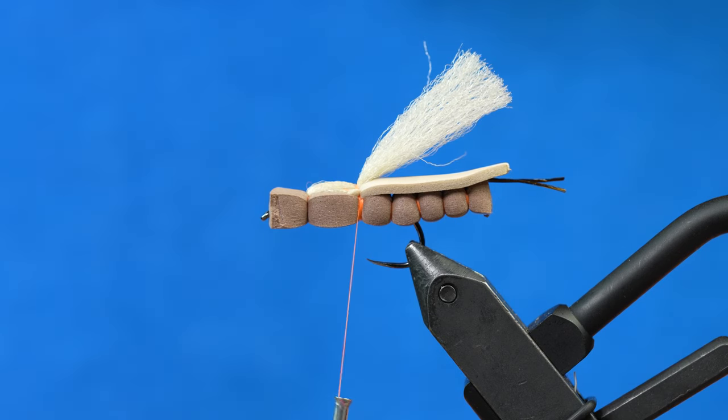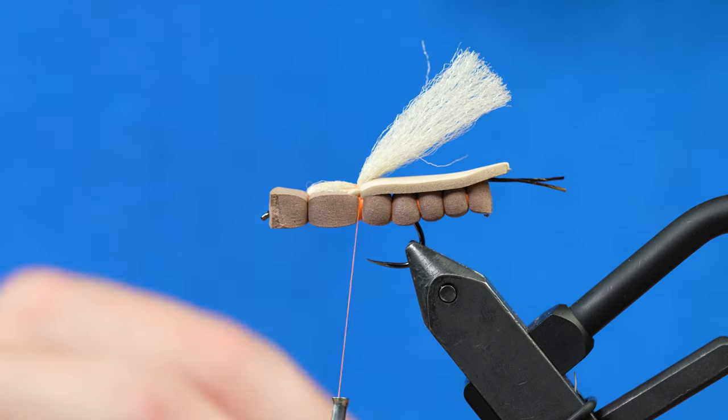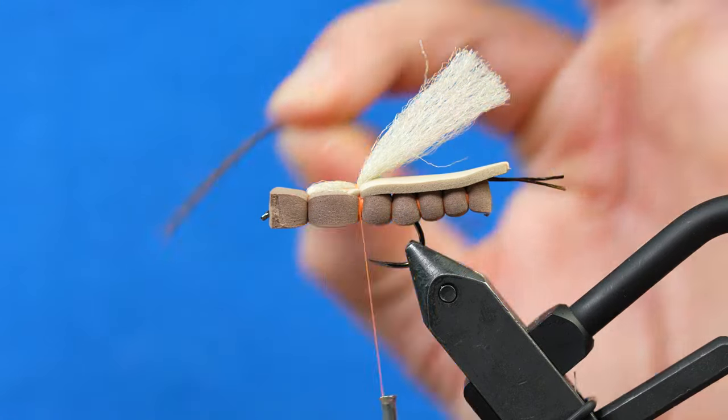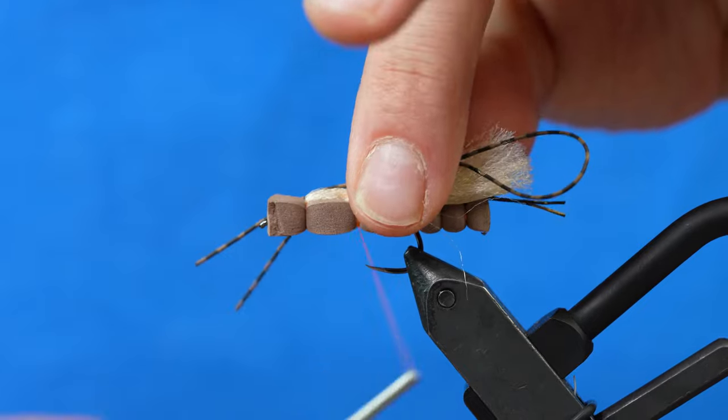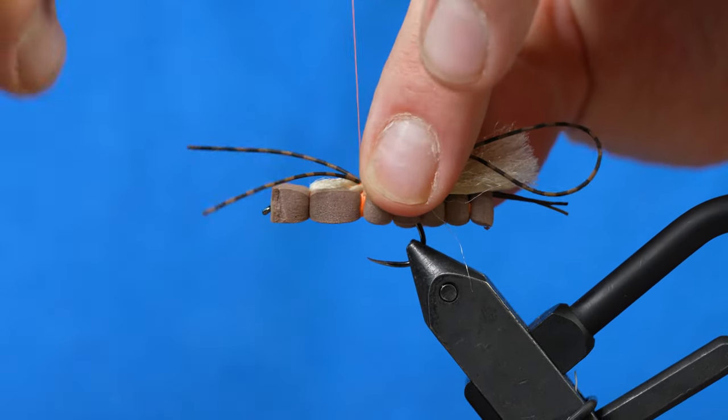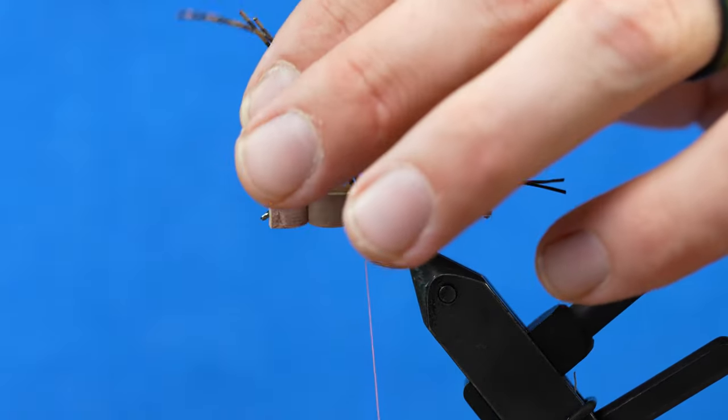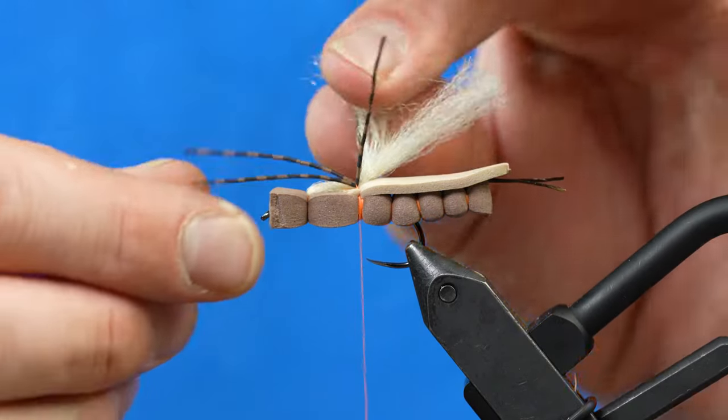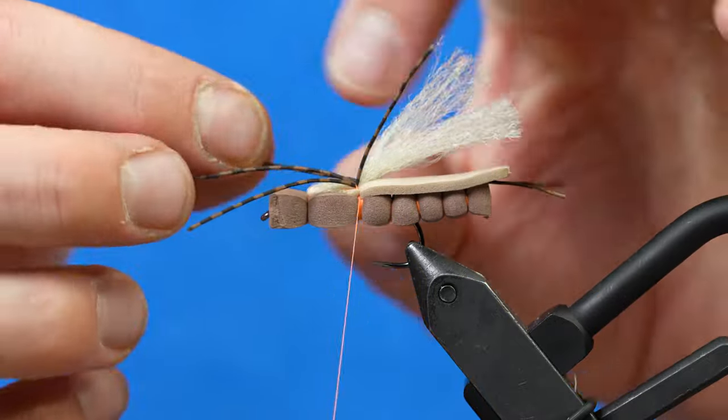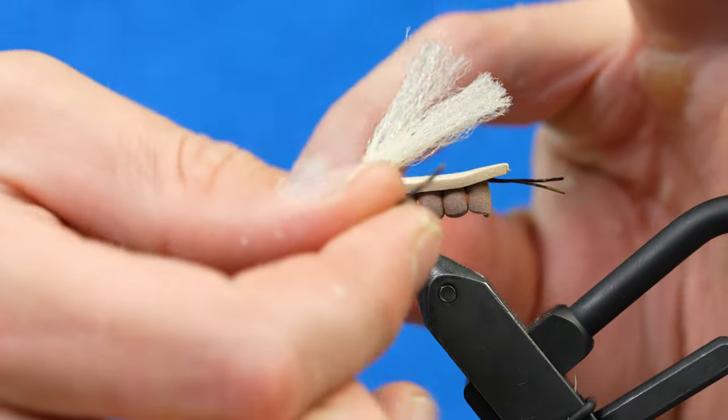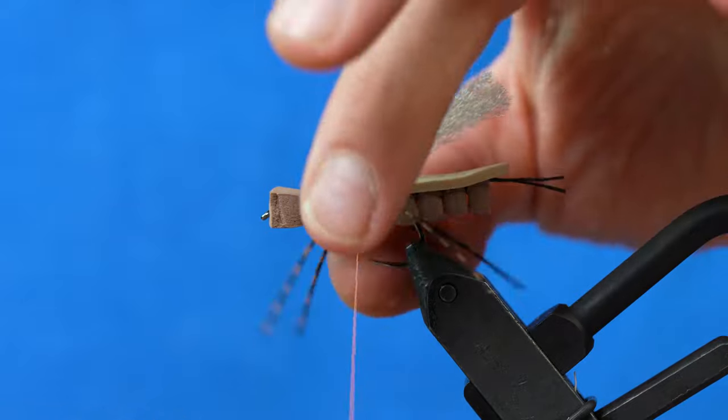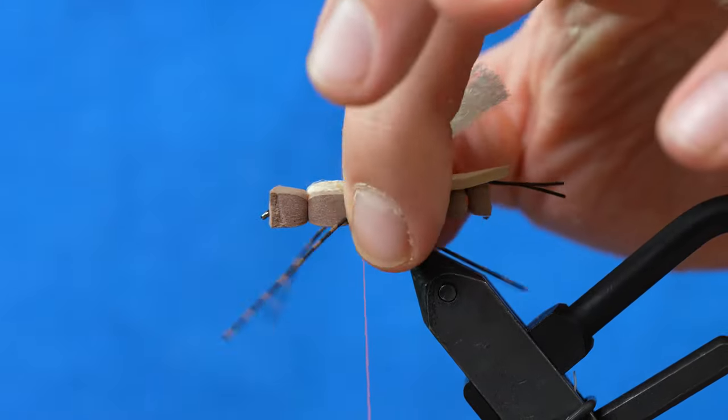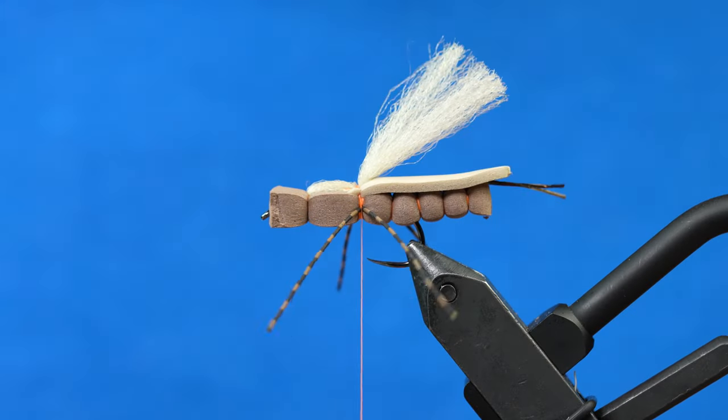And then our next material is going to be some centipede legs, some brown and tan. We're going to tie that in with two pieces. We'll do two soft wraps, trim those guys, and then we'll take each of those legs and we will splay them to either side of the bug right in the middle. We'll do two more wraps and a little cinch to secure that guy.